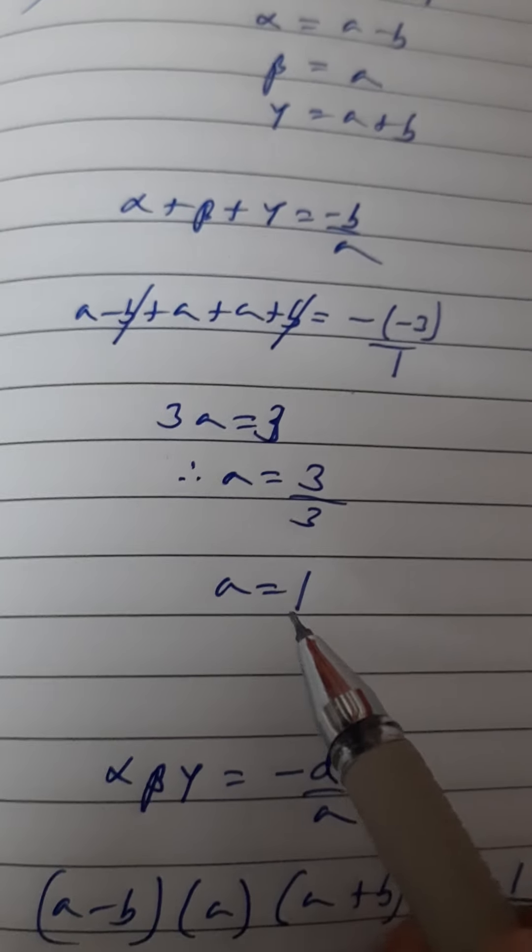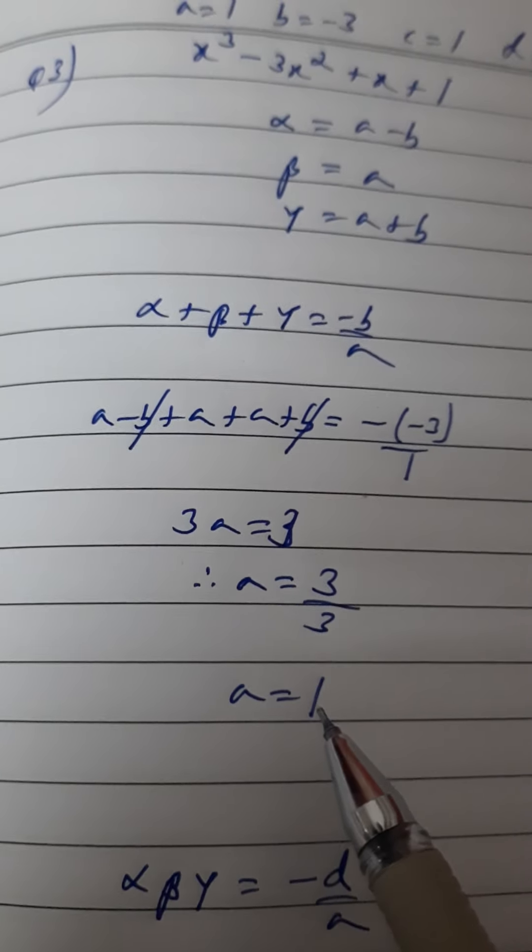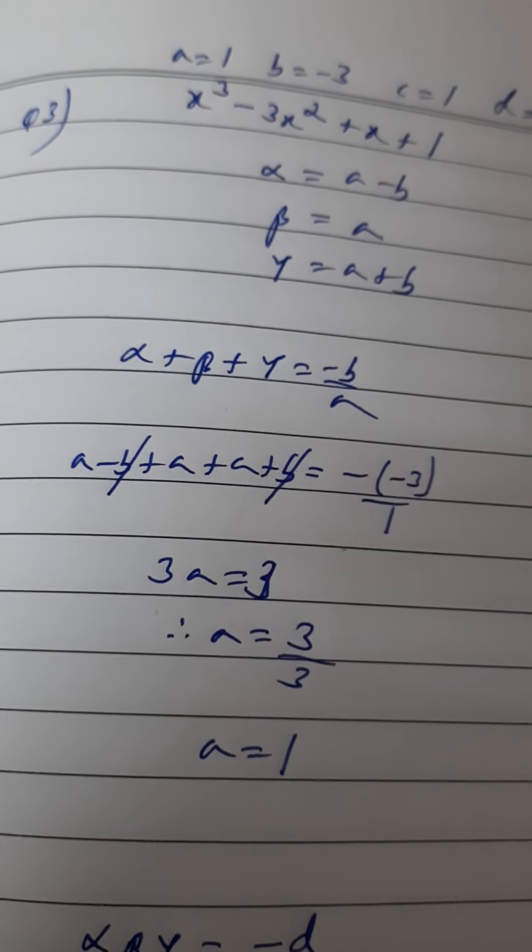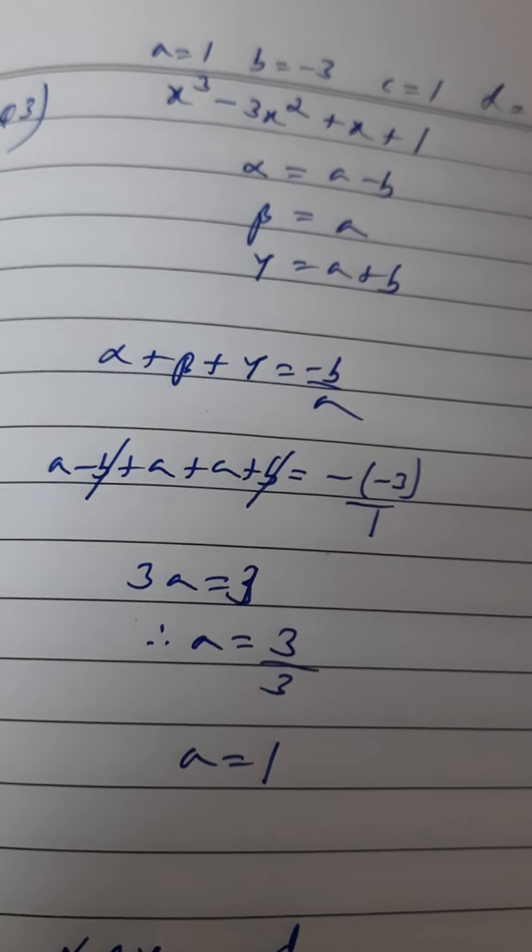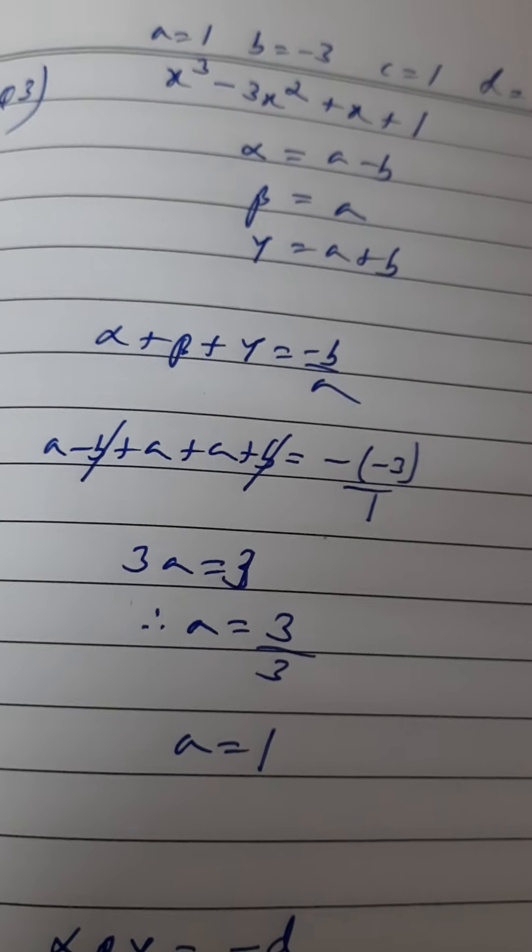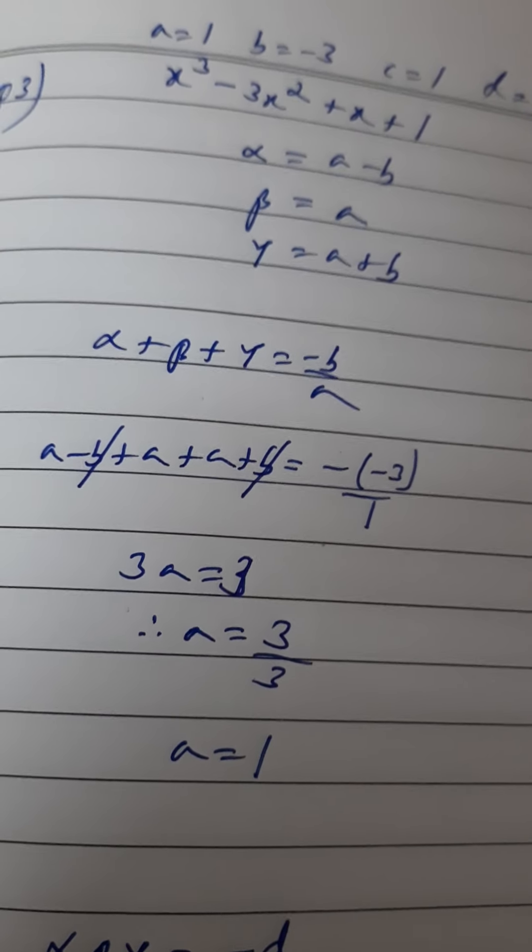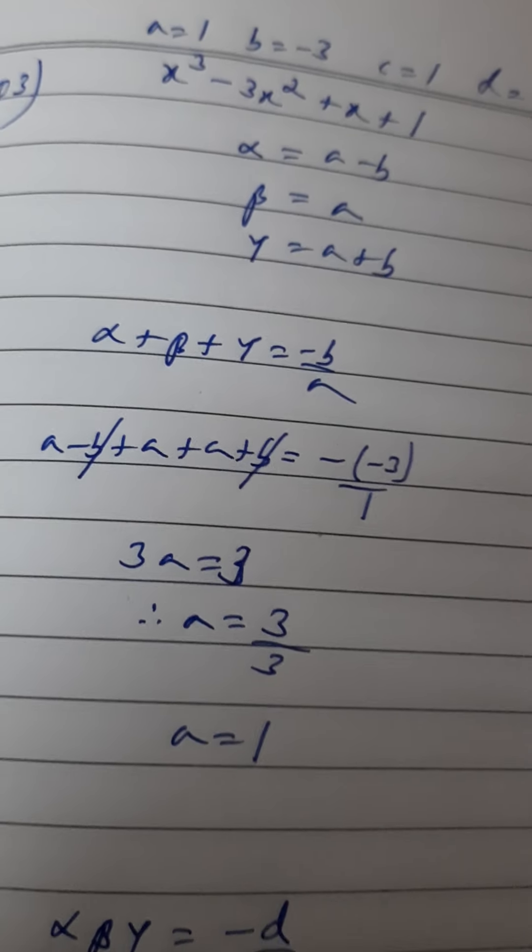Now the second verification formula, αβ + βγ + γα = c/a, is little long, so it's not necessary to use here because the question is not to verify, the question is to find the value of a and b. So we are not doing the second one, we are just using the third one.